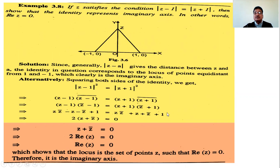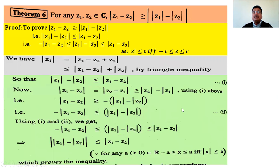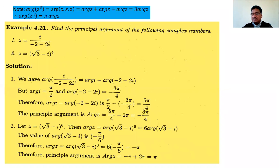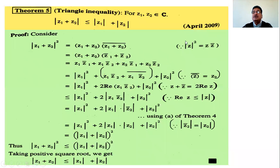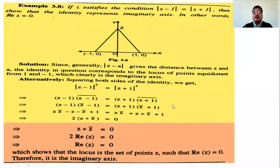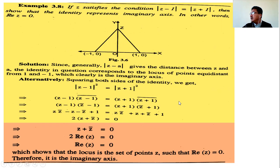We use the identity |Z|² = Z · Z̄. So |Z - 1|² = (Z - 1)(Z - 1)̄, and similarly |Z + 1|² = (Z + 1)(Z + 1)̄. Squaring both sides and applying the rule that |Z|² = Z · Z̄.